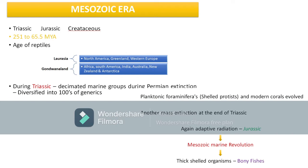One example of that diversification is dinosaurs during the Mesozoic era. During this time, the earth was divided into only two continents: Laurasia in the north and Gondwana in the south. Compared to today, Laurasia corresponds to North America, Greenland, and Western Europe, while Gondwana corresponds to Africa, South America, India, Australia, New Zealand, and Antarctica.